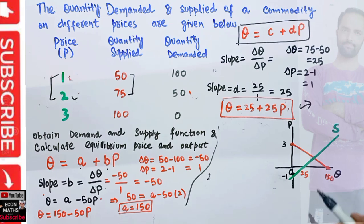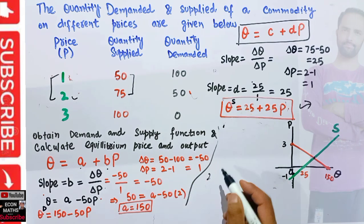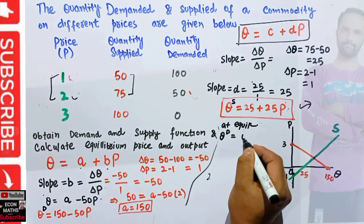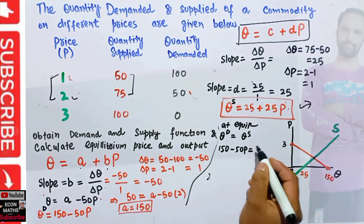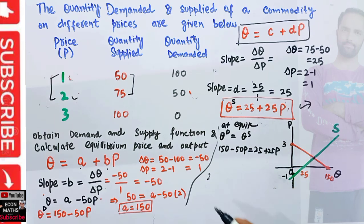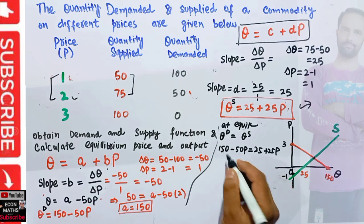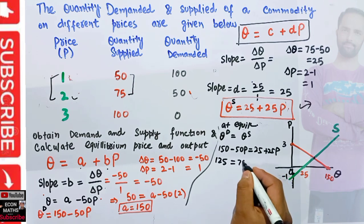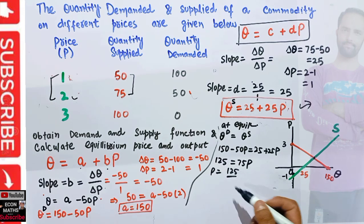We are asked to find the equilibrium price and output. Equilibrium occurs where demand and supply intersect. At equilibrium, quantity demanded equals quantity supplied: 150 minus 50P equals 25 plus 25P. Solving for P: 150 minus 25 equals 25P plus 50P, so 125 equals 75P, giving P equals 125 upon 75, which equals 5 upon 3.